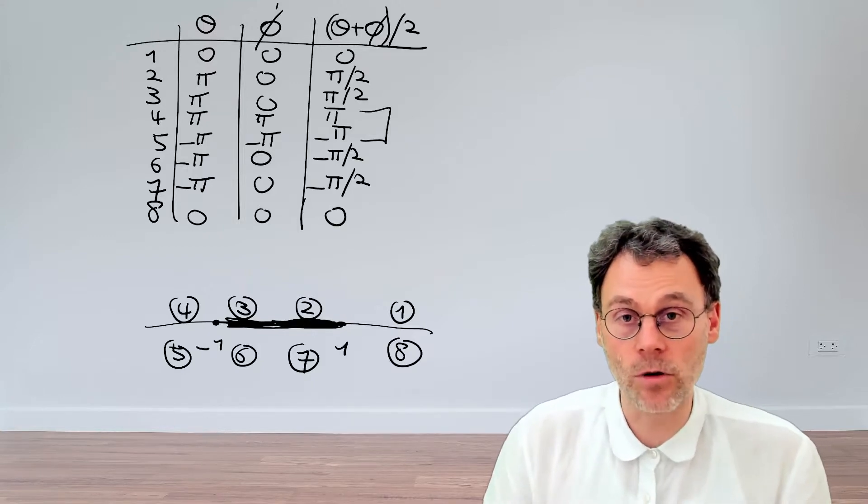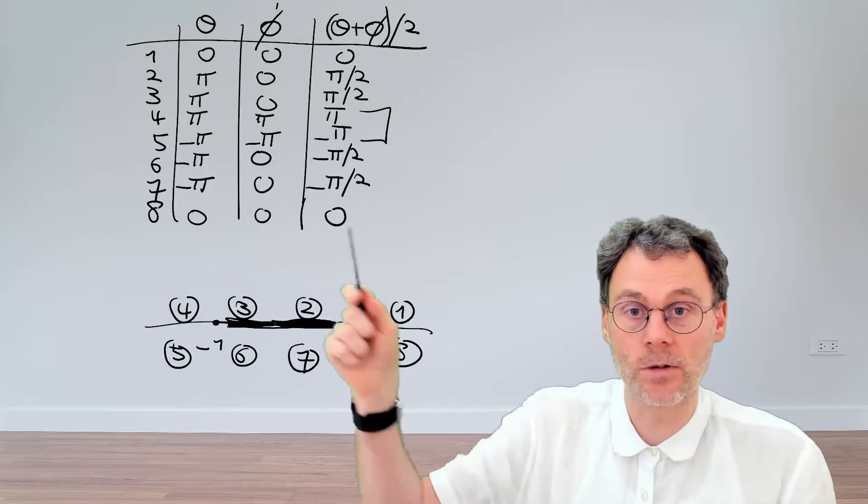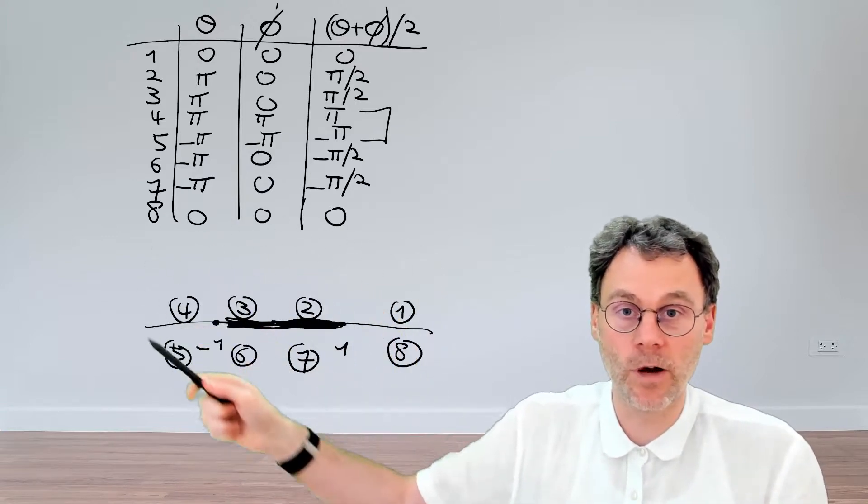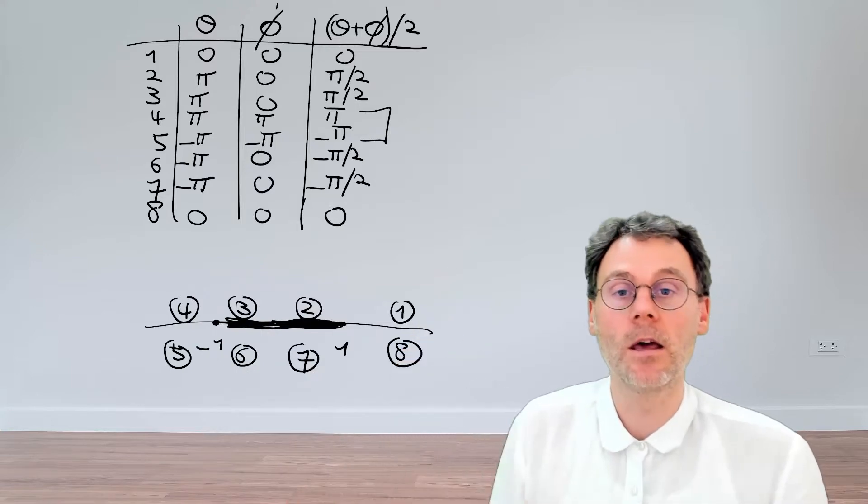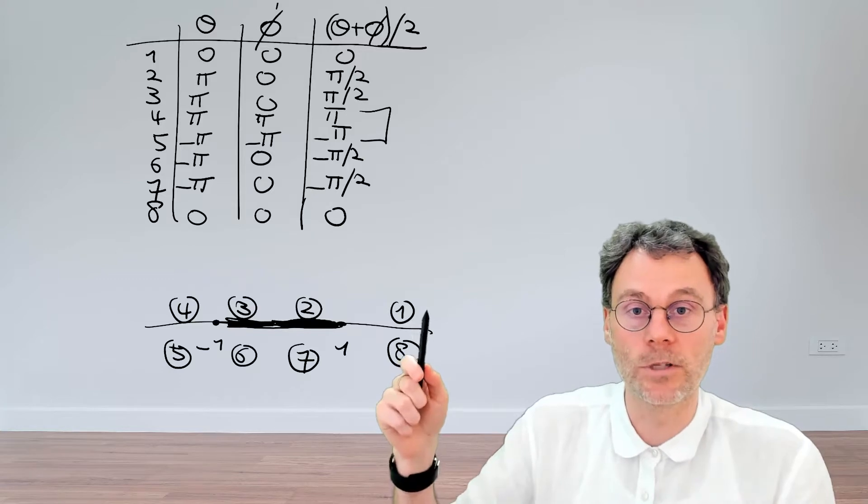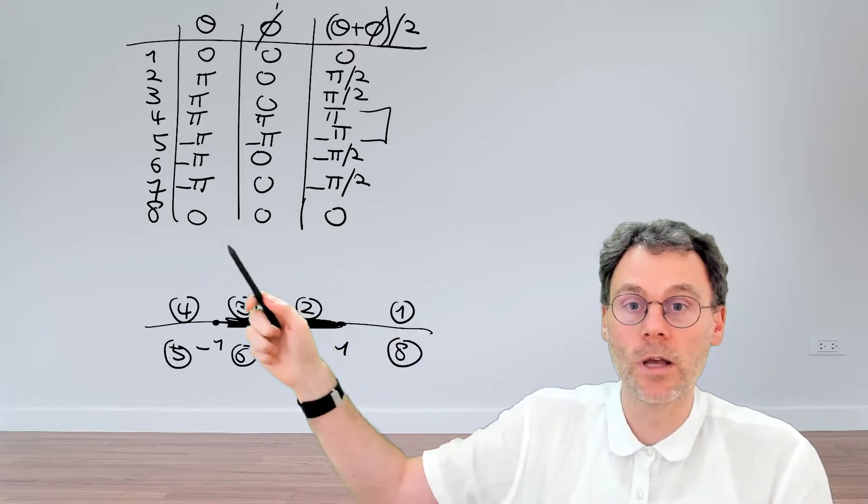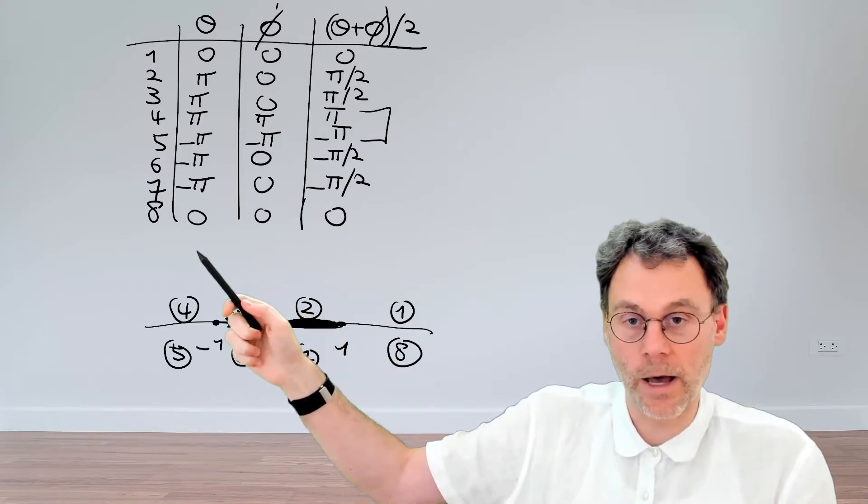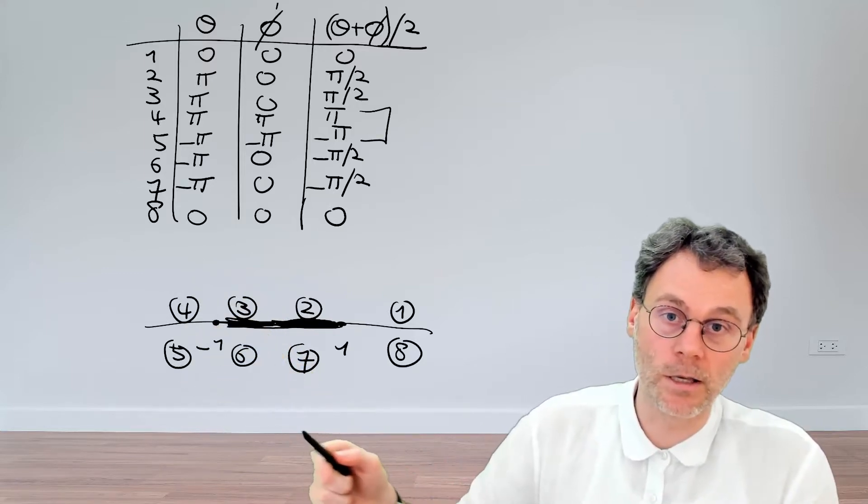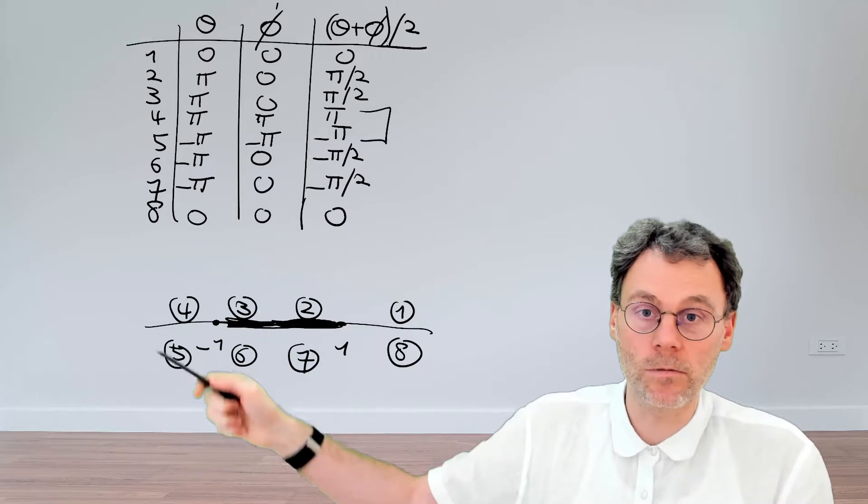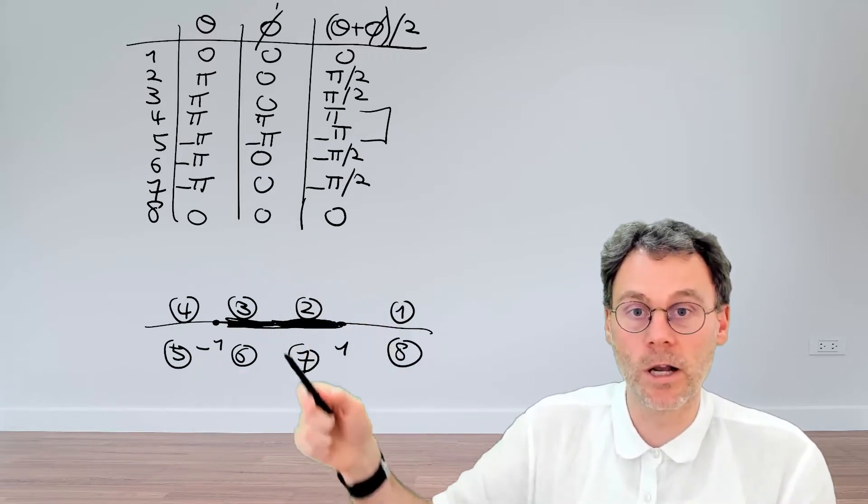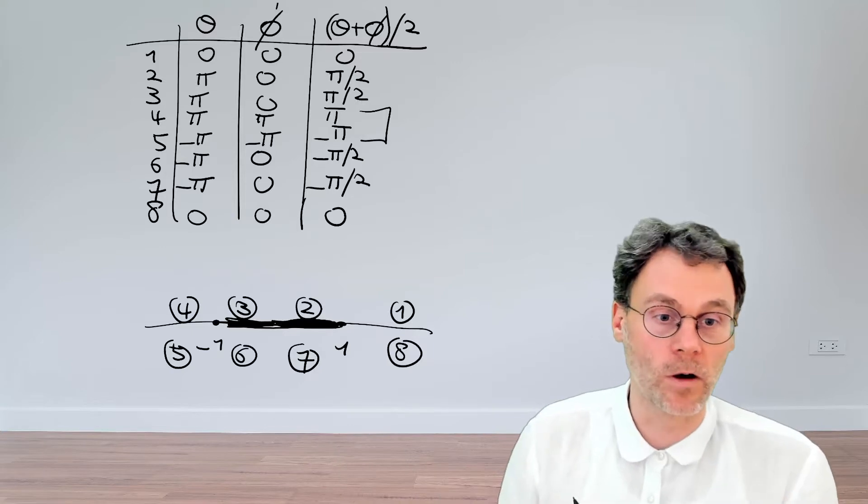And if you do not cross the branch cut, but if you just travel around happily like this, for example, in the complex plane. So from 1, 2, 3, 4, 5, and then back to 8, you can easily verify that the phase keeps on evolving nicely continuously. So from 0 over here, then we have pi over 2, then we have pi, and then we have minus pi, but that's the same thing. And then from minus pi, it keeps on increasing. So here you have continuous evolution, but as soon as you cross this line over there, you pick up a factor of minus 1.